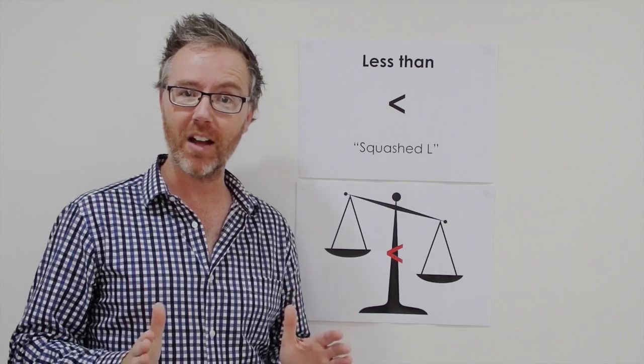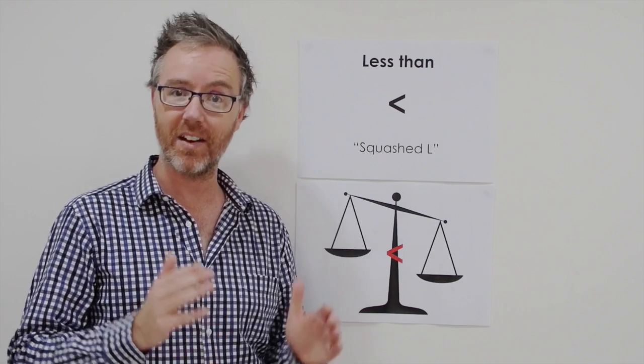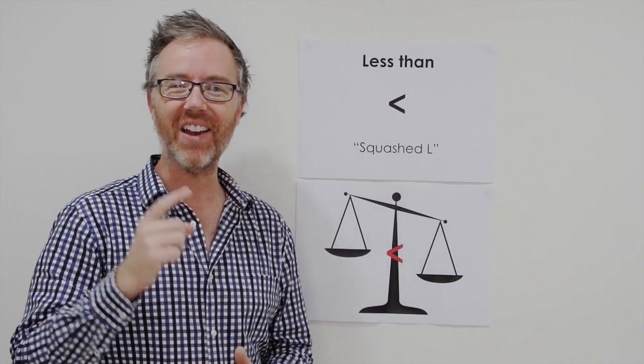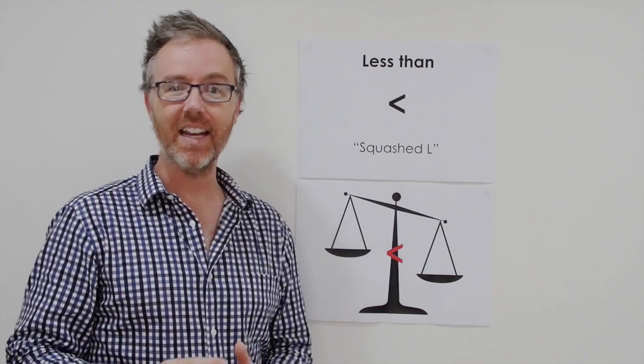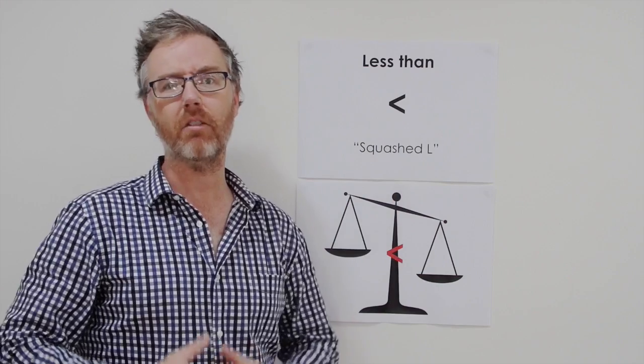So please, if you've been using that system, stop now. I want to teach you a simpler method. We are going to be memorizing the less than symbol and the greater than symbol, then reading it properly on the page from left to right as it's meant to be read. We're going to remember that less than is a squashed L.